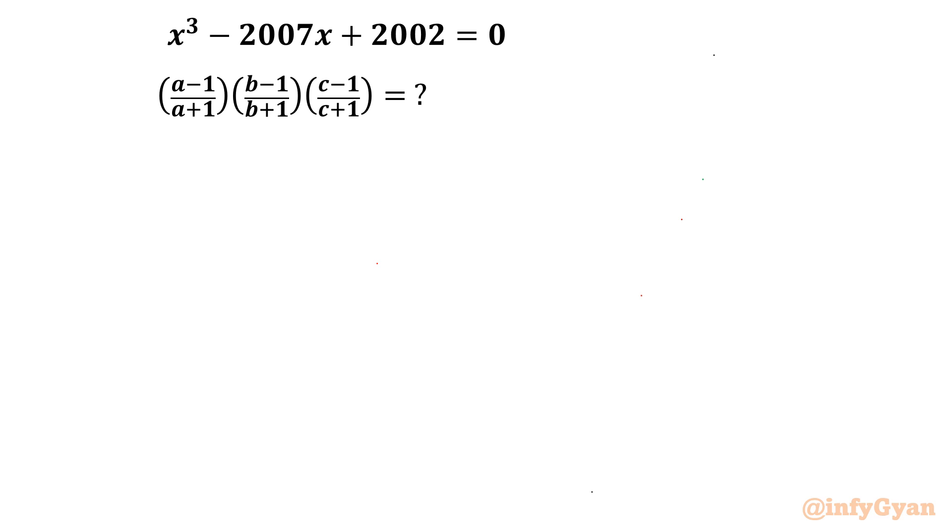One cubic equation is known: x³ - 2007x + 2002 = 0, whose roots are a, b, and c. Now we have to simplify this expression value (a-1)/(a+1) times (b-1)/(b+1) times (c-1)/(c+1).